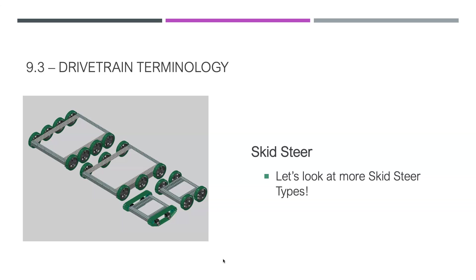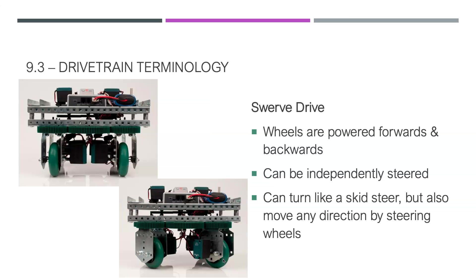There are more skid steer variations — some with multiple wheels instead of just four, and some with treads instead of wheels. The major benefit to adding more wheels is that you can build a bigger robot with a bigger frame. For our particular purposes, we don't necessarily need a bigger base, but if you wanted one, skid steer is a very good way to do it.